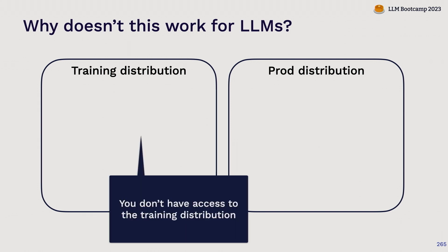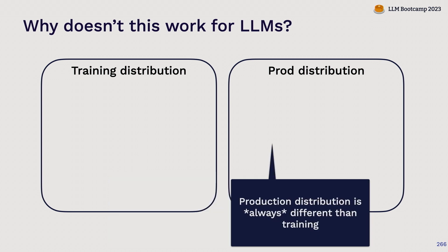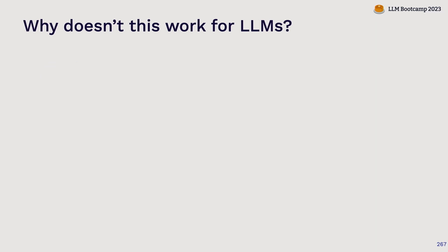Why doesn't this work for LLMs? First, you don't have access to the training distribution — OpenAI isn't telling you what's in their training data. And even with open source models, many don't have open datasets. Even if they do, you don't really know what's in the pile dataset. Second, in traditional ML we worked hard to ensure training and production data were similar. But in the modern LLM world, your production data is always different from your training data no matter what — because you don't control the training dataset, and you're always trying it on some new task. This paradigm doesn't really make sense anymore.